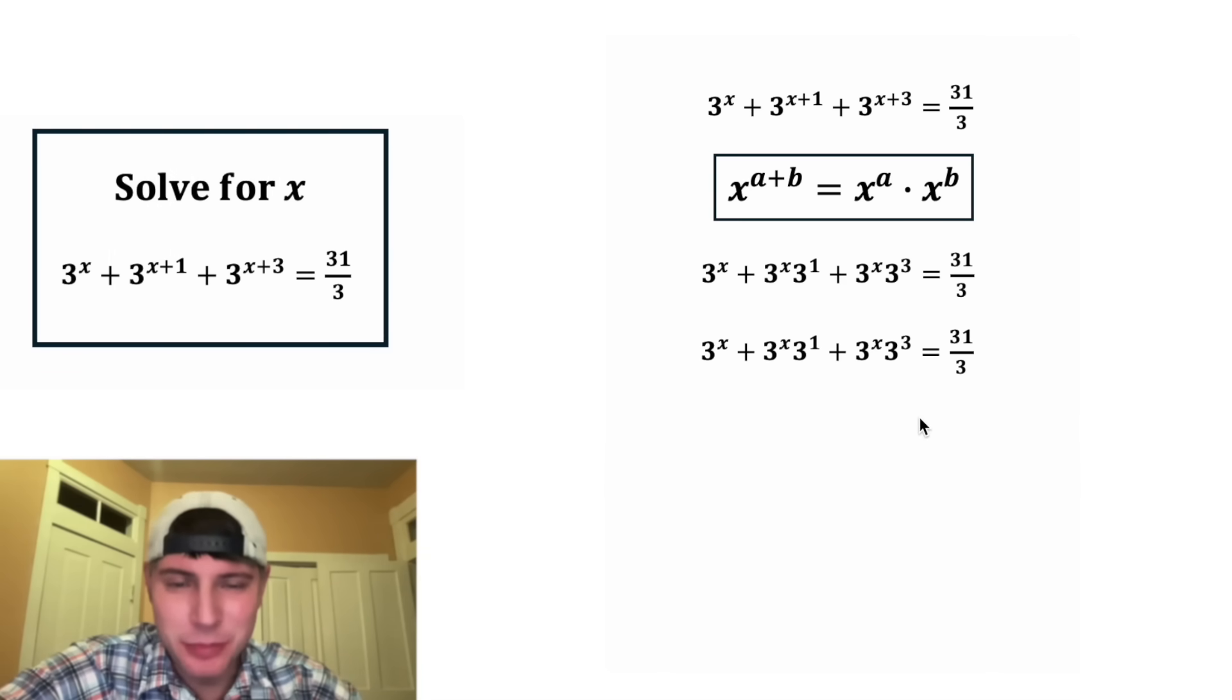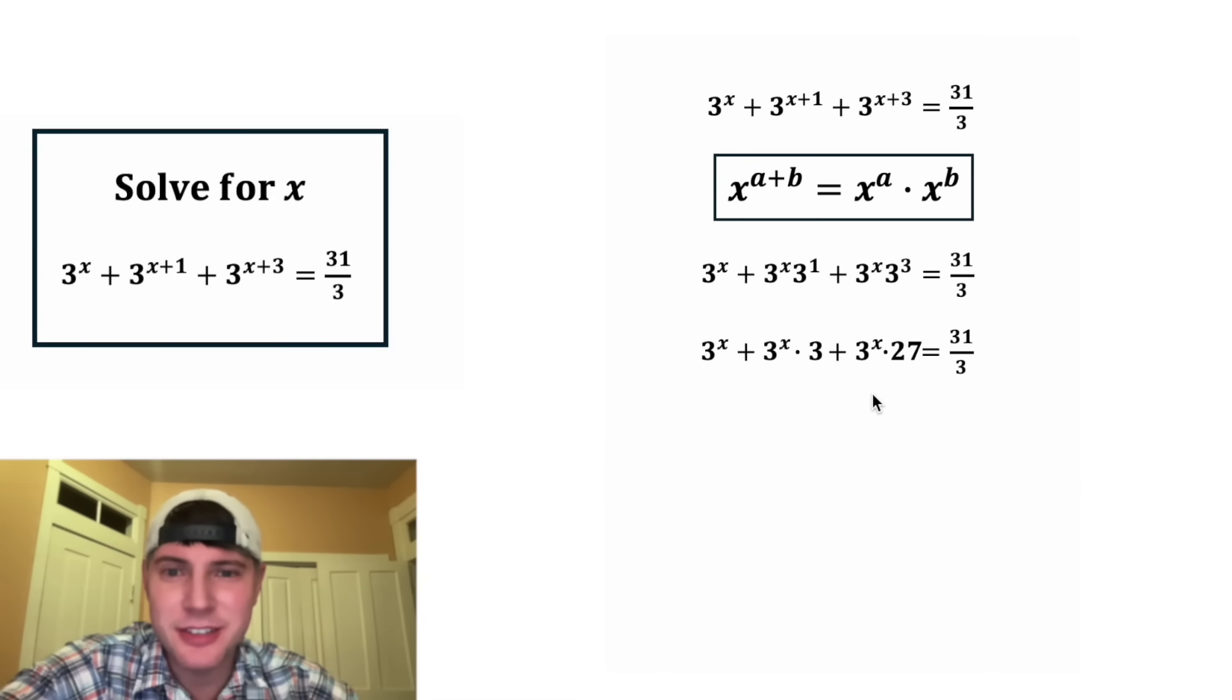And now let's try to simplify some things. This three to the one is three and three cubed is 27. And now we have three separate terms. All of them contain a three to the x.